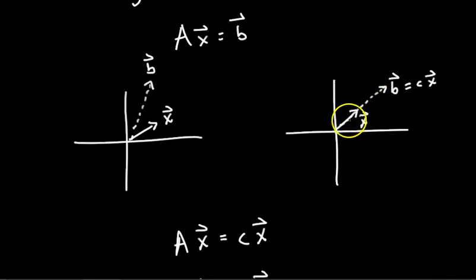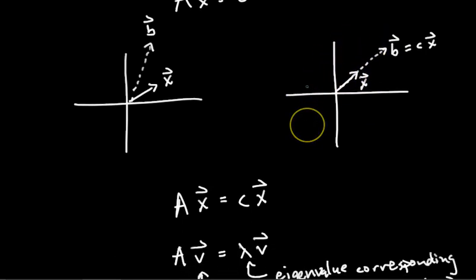You input this vector and then it just happens that when you multiply it by A, it gets scaled by some number instead of being rotated off its span. So when it gets scaled, a natural question to ask is how much does it get scaled by? Well that scaling factor is the corresponding eigenvalue.